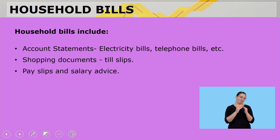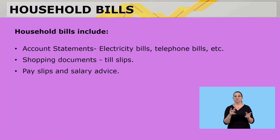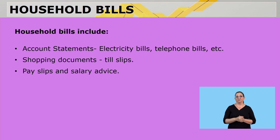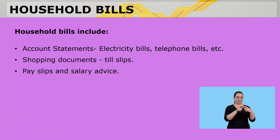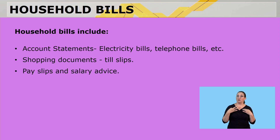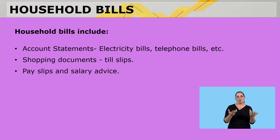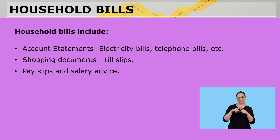A household bill includes account statements for electricity, telephones, water, utilities, anything like that. It can be shopping documents like till slips or clothing account statements, and then it can also include pay slips and salary advice slips.